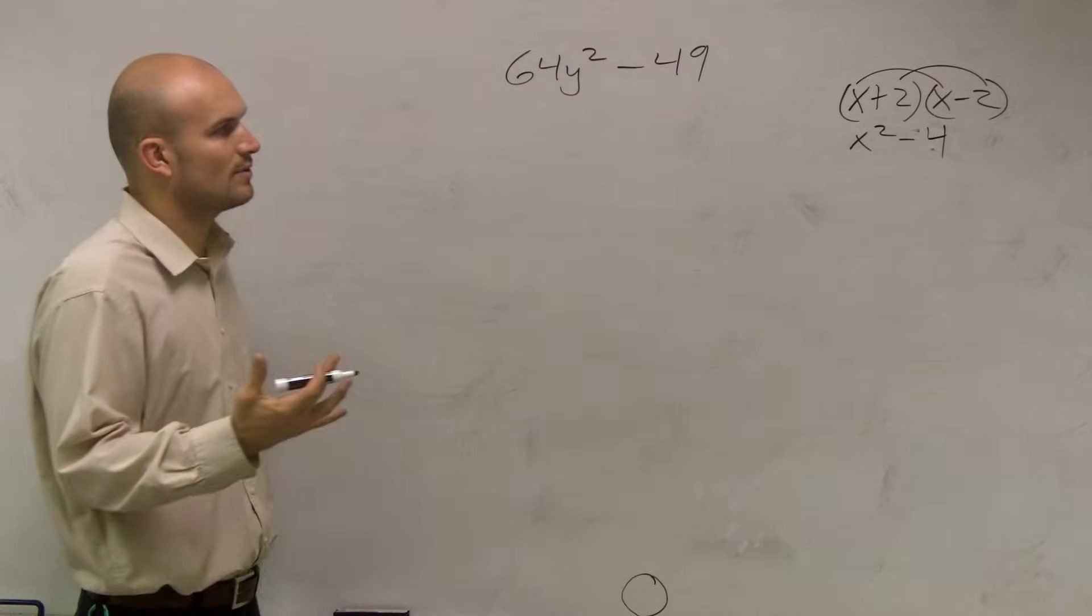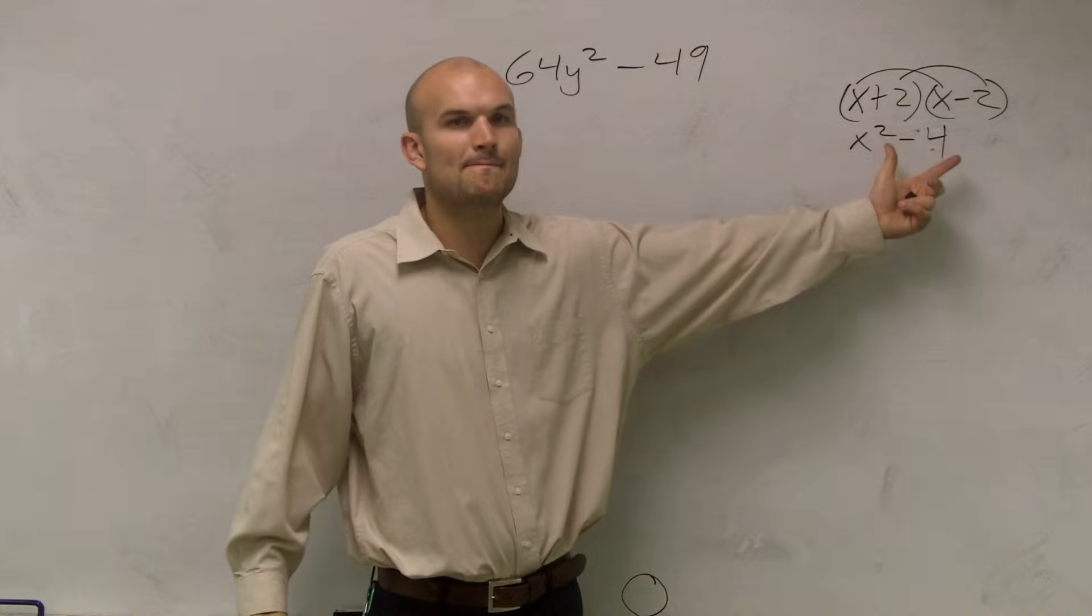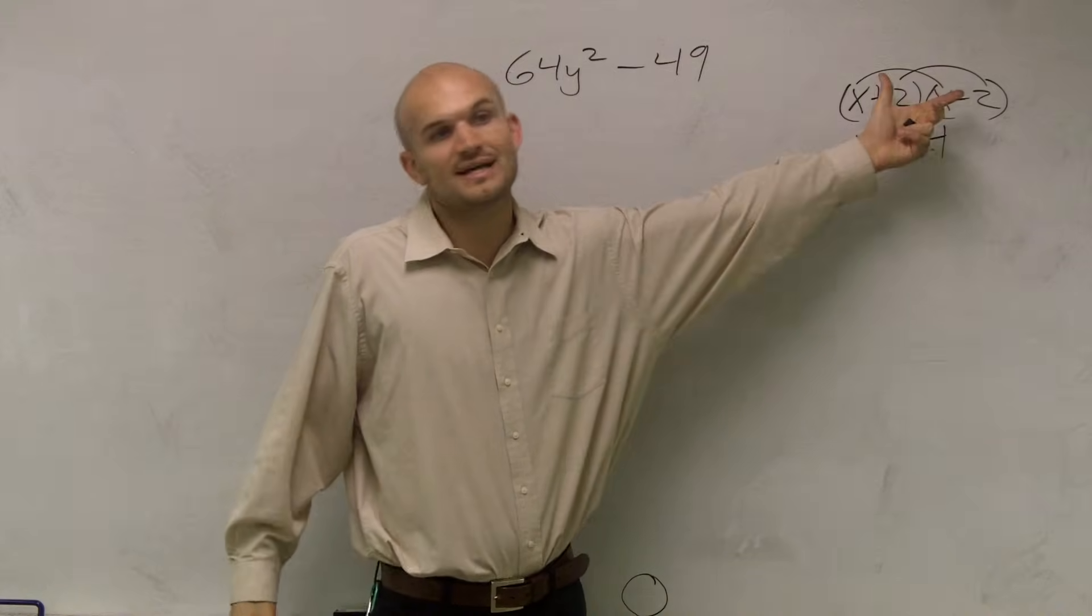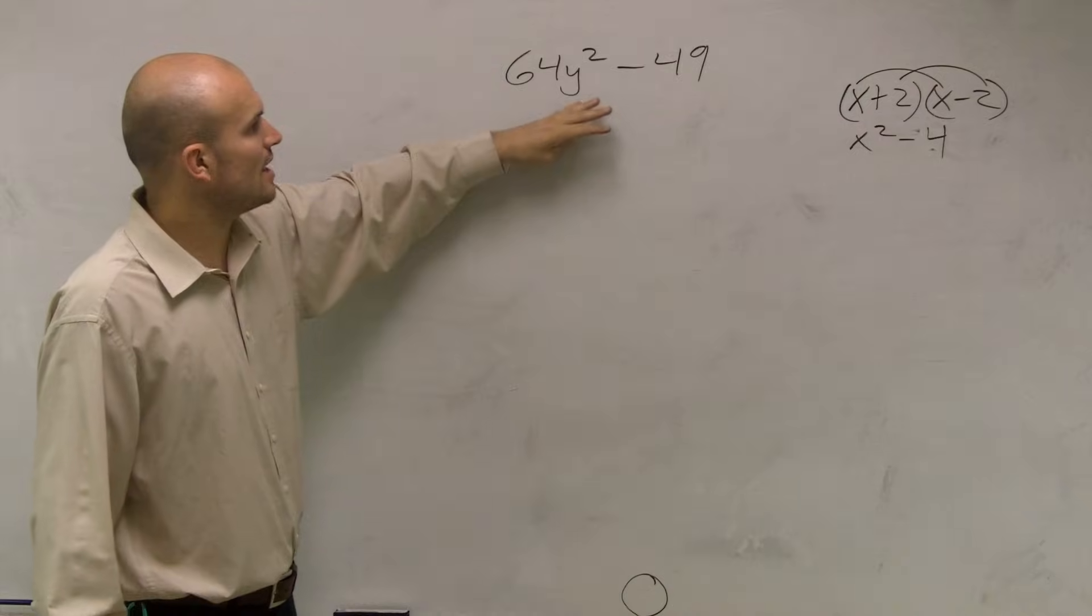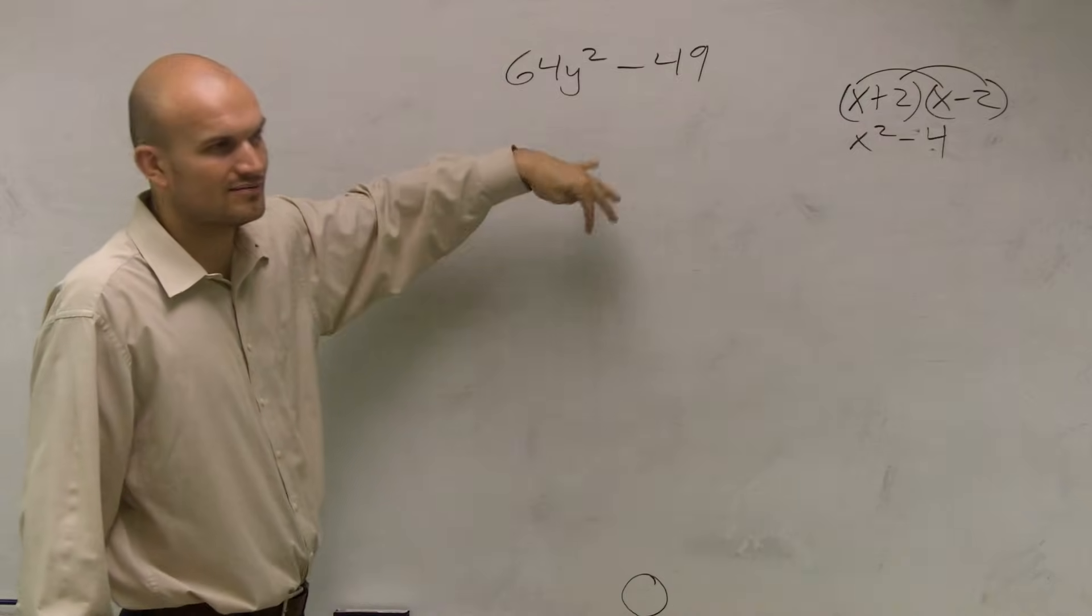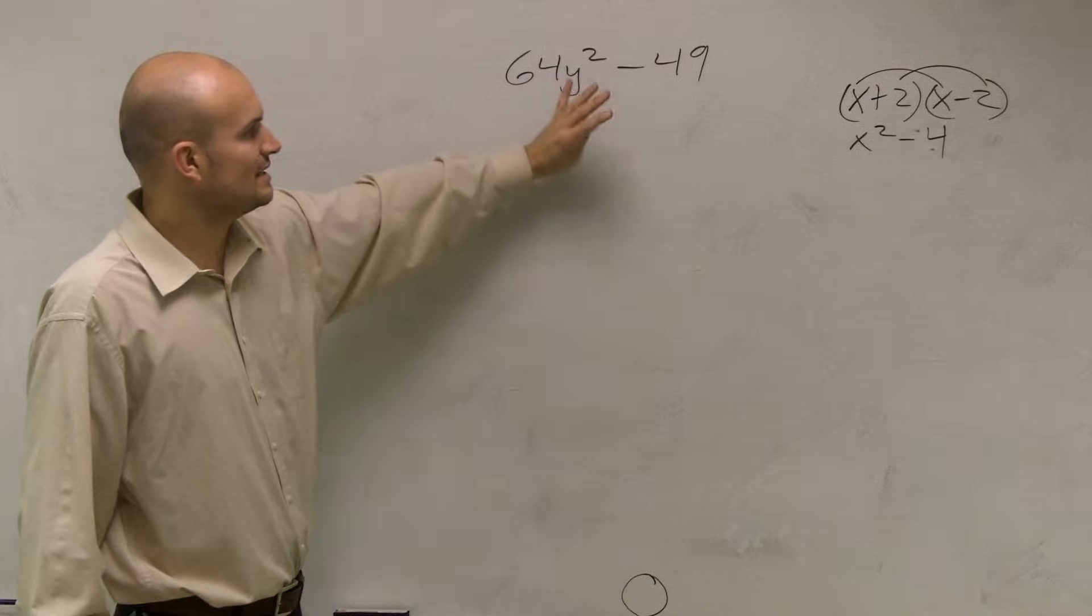Here, what we're going to do is work backwards. We're trying to take a binomial and rewrite it as the product of something. First, I try to see if there's something I can factor out, and no, there's nothing they share.